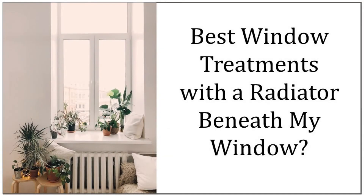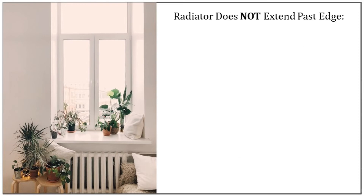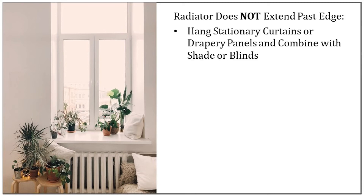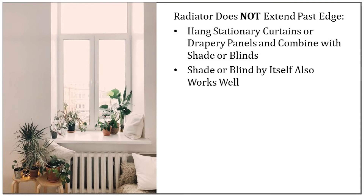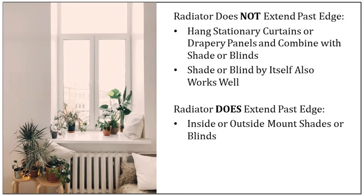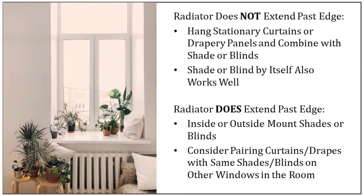In many parts of the world, it's not uncommon to have a radiator directly beneath a window, which can create a design challenge when it comes to window treatments. If the radiator is directly below your window and does not extend past the window edges, one great option is to hang stationary curtain or drapery panels on the sides of the window to frame it, then layer that with a simple window covering like a roller shade, Roman shade, woven shade, or stylish blinds for privacy. Alternatively, you could forgo the curtains altogether and just use a shade. If your radiator extends beyond the edge of the window, your best solution is to hang inside or outside mount shades or blinds. For other windows in the room without obstruction, hang the same shades or blinds but pair them with coordinating curtains or drapes to add texture and softness to your room.